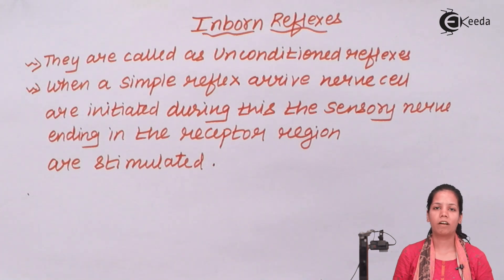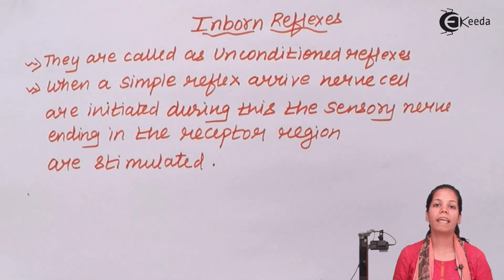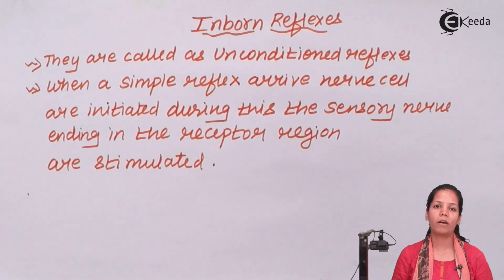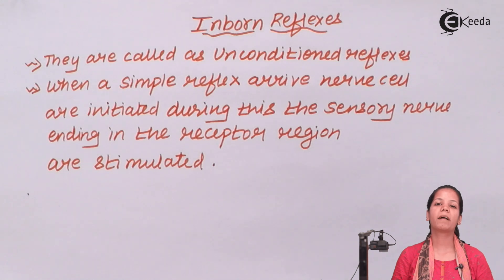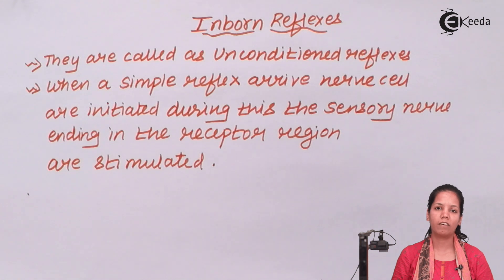In between, there are associated neurons that analyze the function. Basically there is signaling taking place between the neurons, and this signaling is also governed by acetylcholine (ACH). The presynaptic nerve and the postsynaptic nerves are associated with it. So students, inborn reflexes, also called unconditioned reflexes — I hope you are very clear with this concept. Thank you.